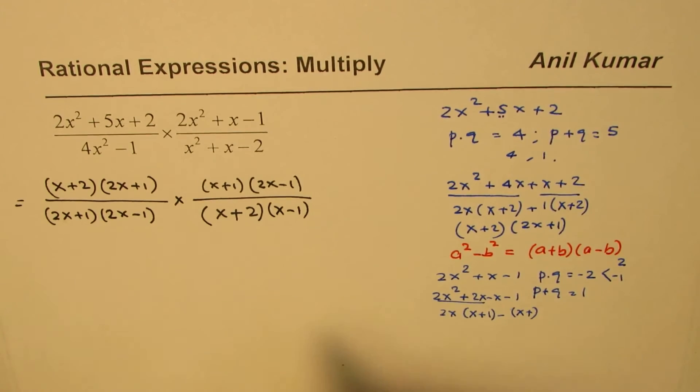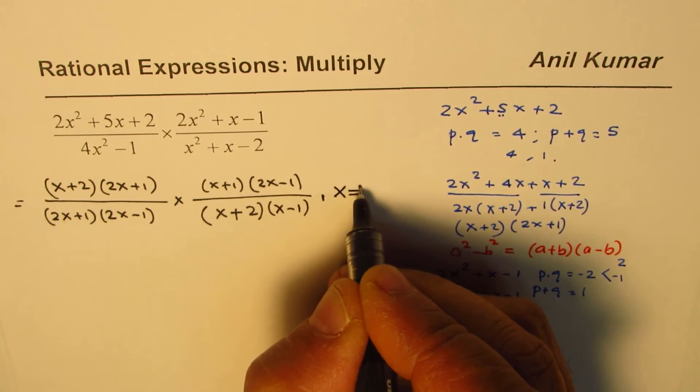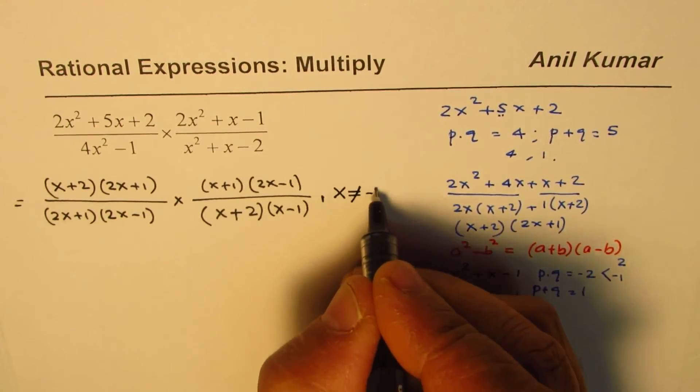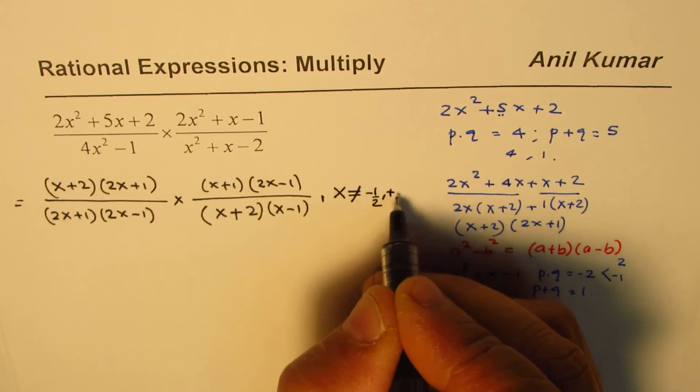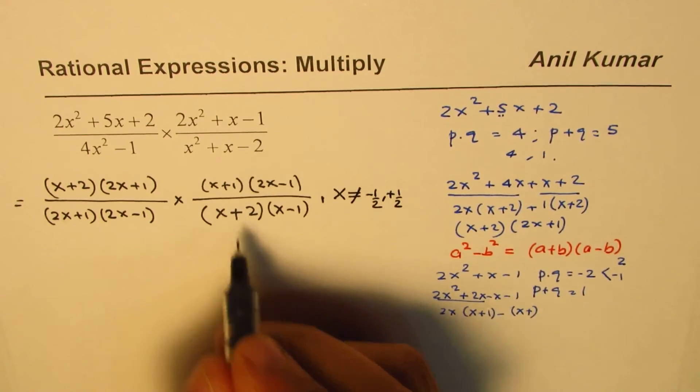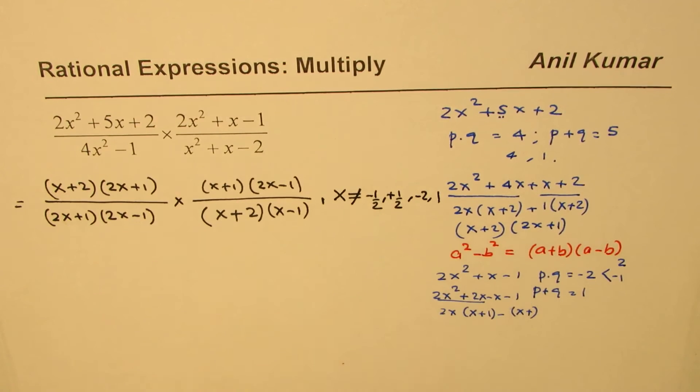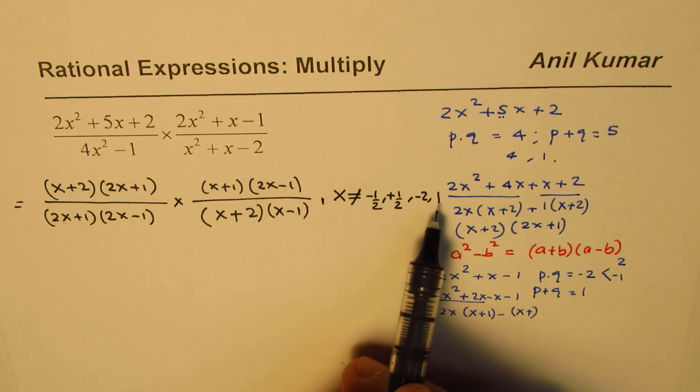Once you have the factored form, it's a good idea to write all the restrictions. So, from here, denominator cannot be equal to 0, so we have some restrictions. x cannot be equal to minus half, this is what we get from here, and also plus half, x cannot be equal to plus half, and here we get x cannot be equal to minus 2, and from there, x cannot be equal to 1. So, the rational expression has four restrictions: x cannot have minus half, plus half, minus 2, and 1.